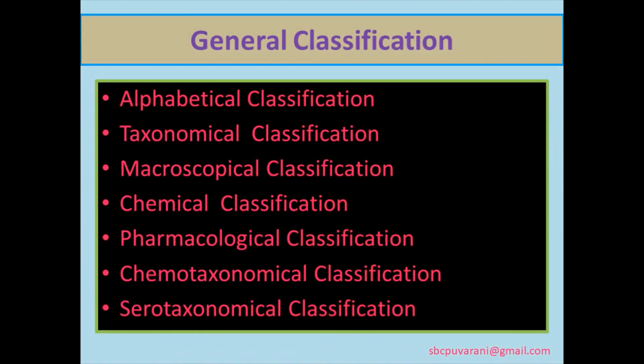Crude drugs are generally classified as: alphabetical classification, taxonomical classification, macroscopical classification, chemical classification, pharmacological classification, chemotaxonomical classification, and serotaxonomical classification.